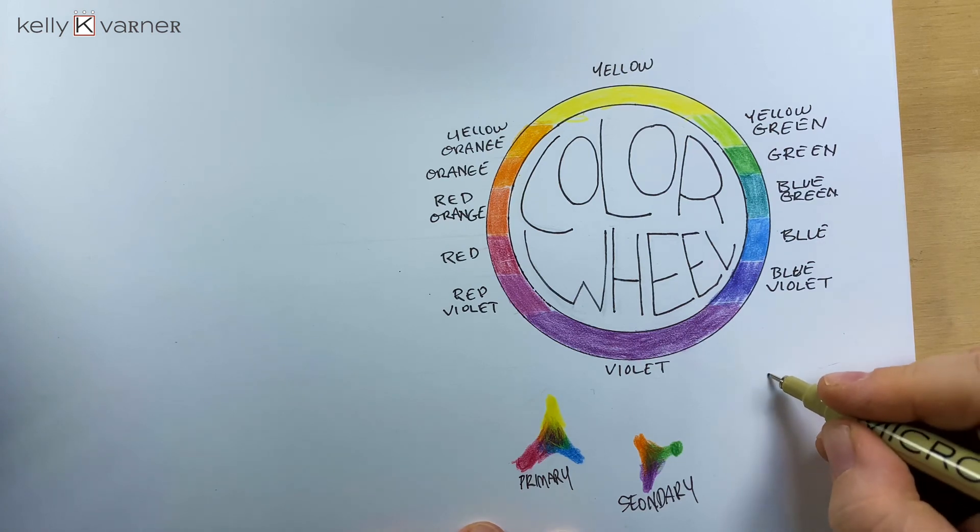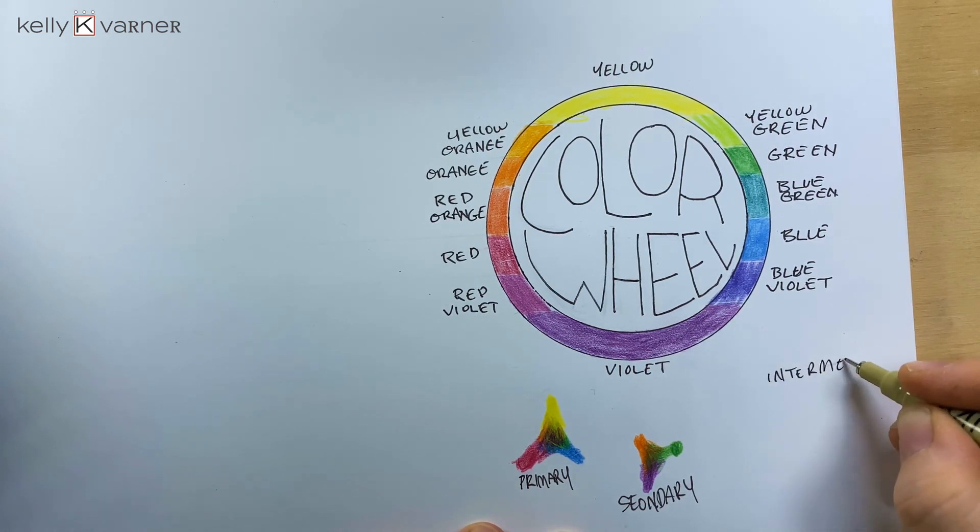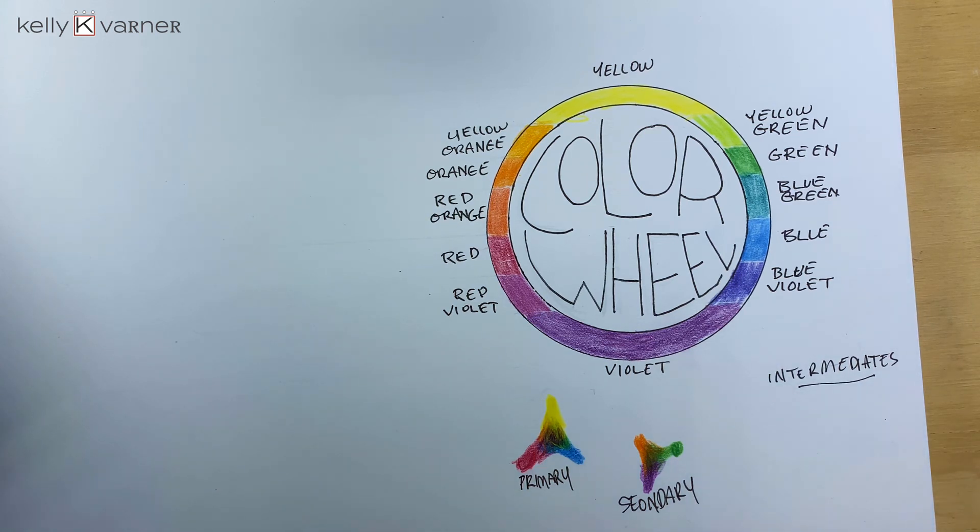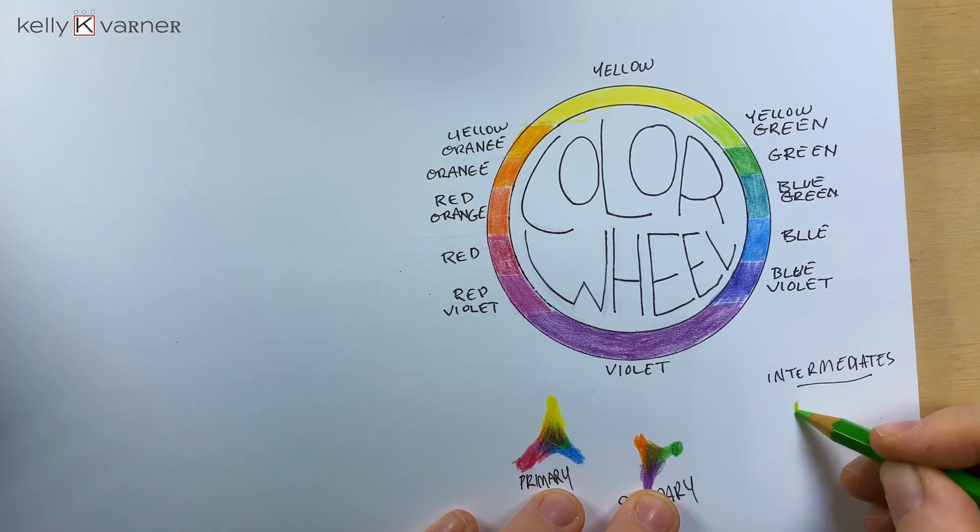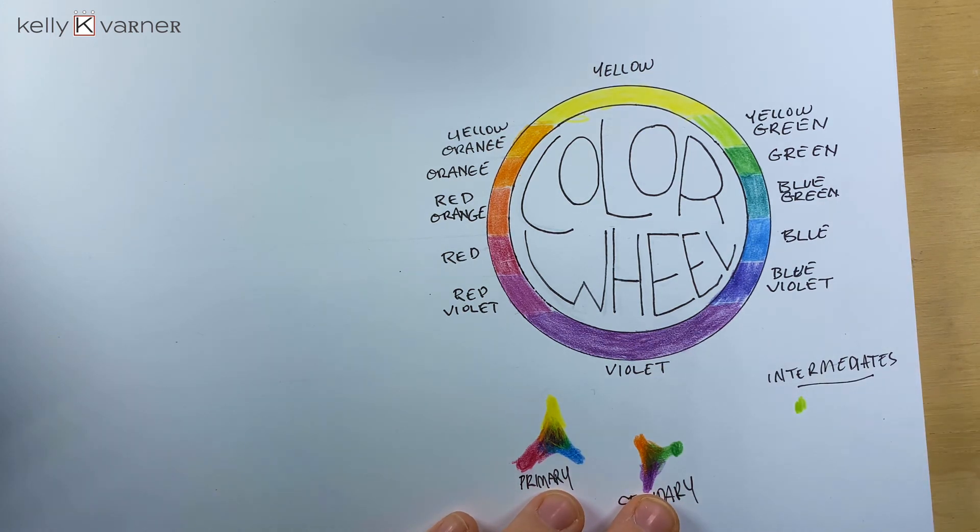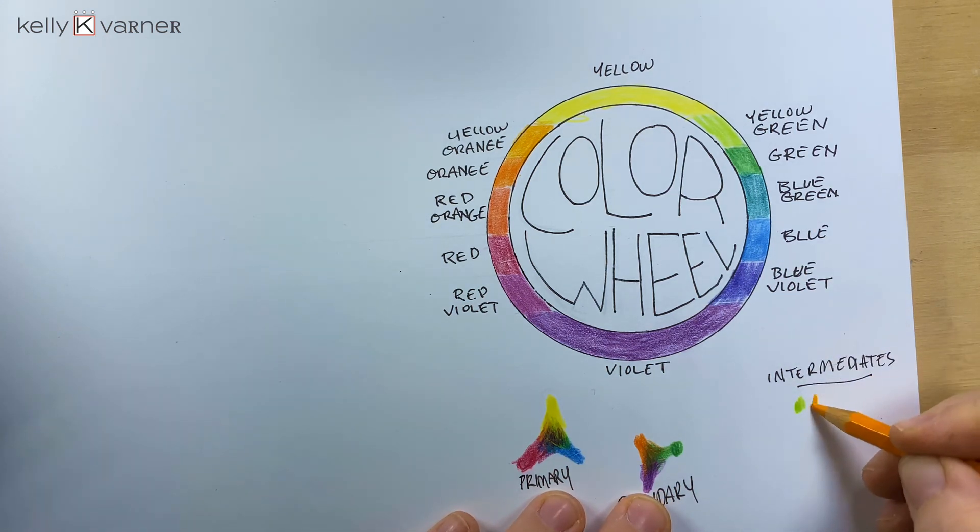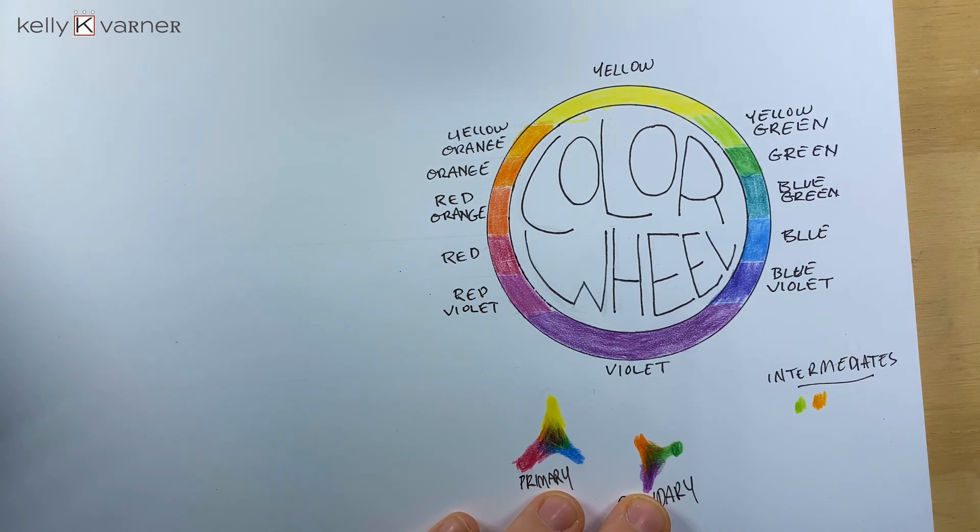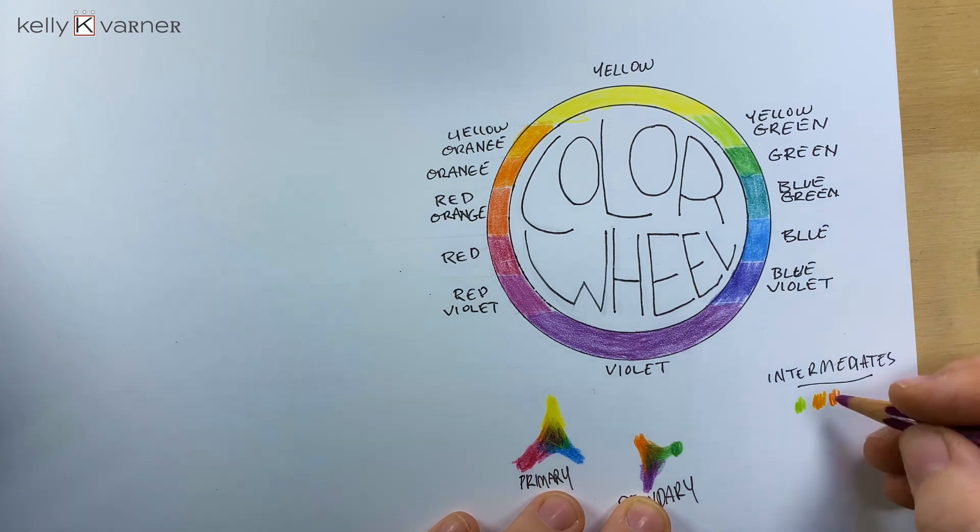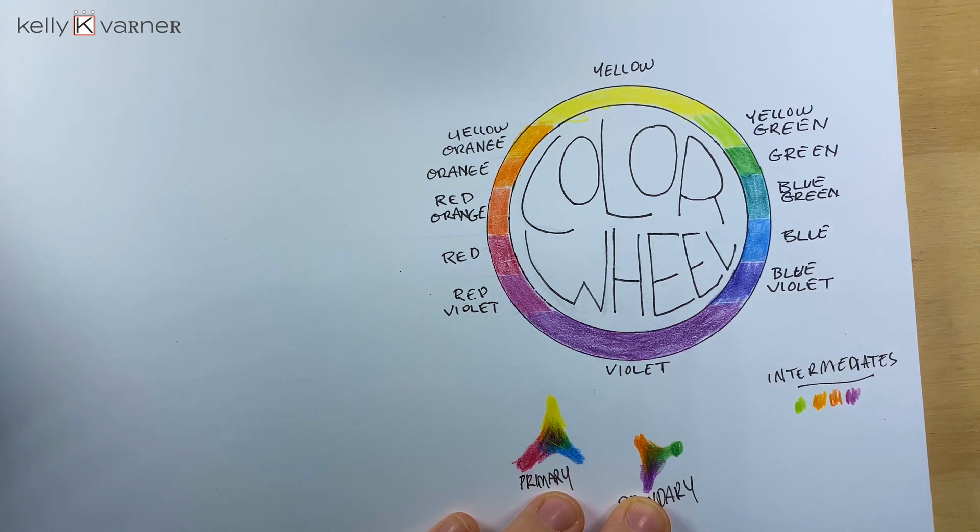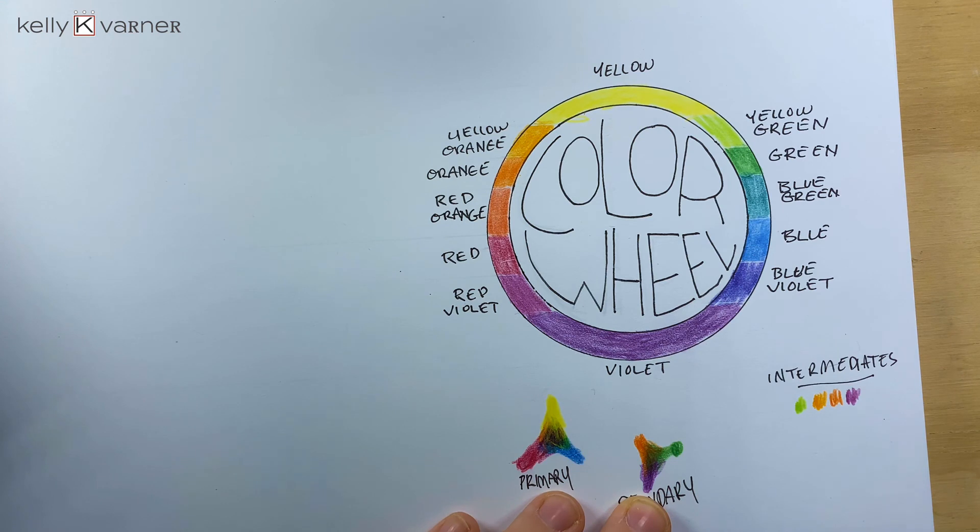And the intermediates are going to be your yellow-green, your yellow-orange, your red-orange, your red-violet, your blue-violet, and your blue-green.